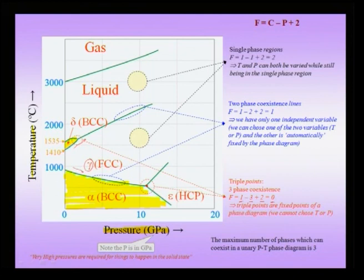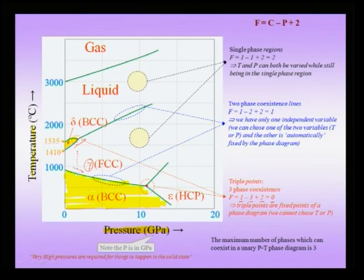Similarly, if you calculate the degrees of freedom for the coexistence point where the delta phase, the liquid phase, and the FCC phase coexist, you would again note that the degrees of freedom is 0. This implies it is also an invariant of the phase diagram, which means it occurs at a very fixed pressure and a fixed temperature.